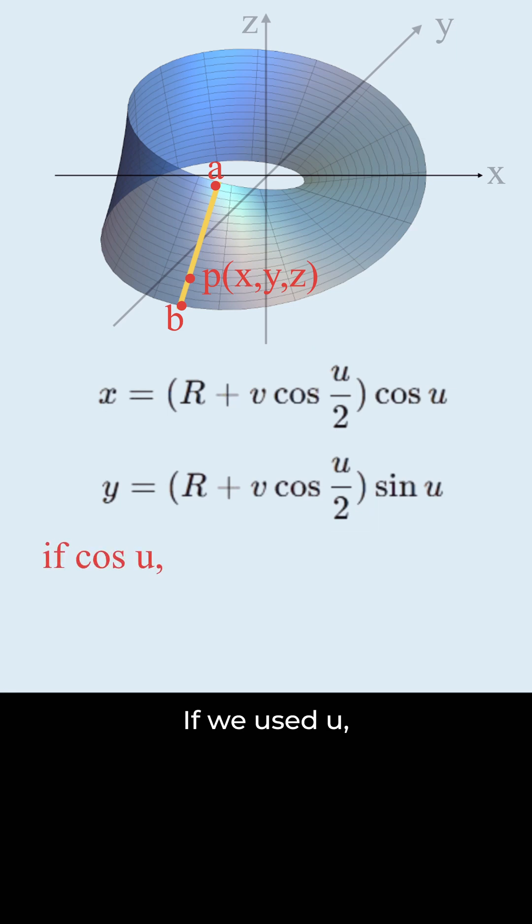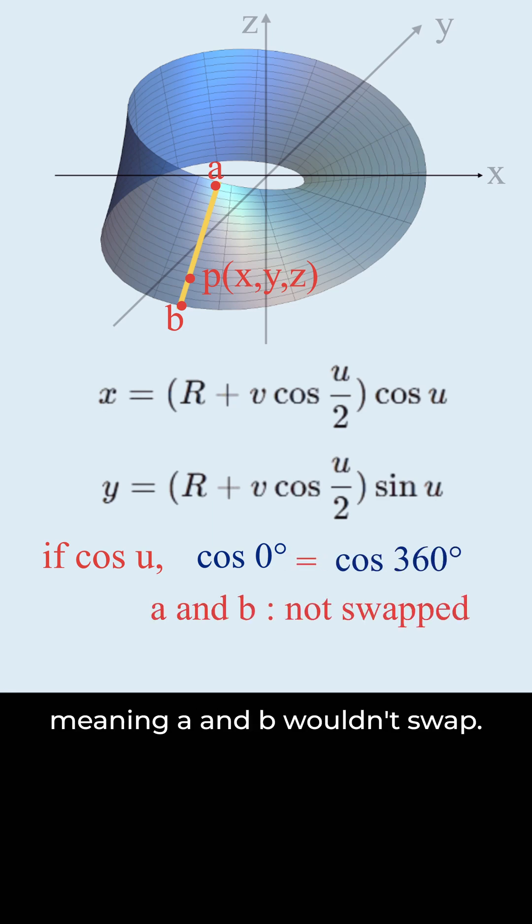Why u over 2? If we used u, cosine 0 degrees and cosine 360 degrees would be the same, meaning a and b wouldn't swap.